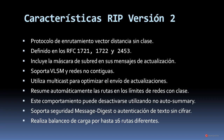La versión 2 del protocolo eliminó algunas limitaciones de la versión 1. Es un protocolo de enrutamiento vector distancia sin clase, definido en los RFC 1721, 1722 y 2453. Incluye la máscara de subred en sus mensajes de actualización, soporta VLSM y redes no contiguas, utiliza multicast para optimizar el envío de actualizaciones, resume automáticamente las rutas en los límites de redes con clase (desactivable con 'no auto-summary'), soporta autenticación y realiza balanceo de carga por hasta 16 rutas.